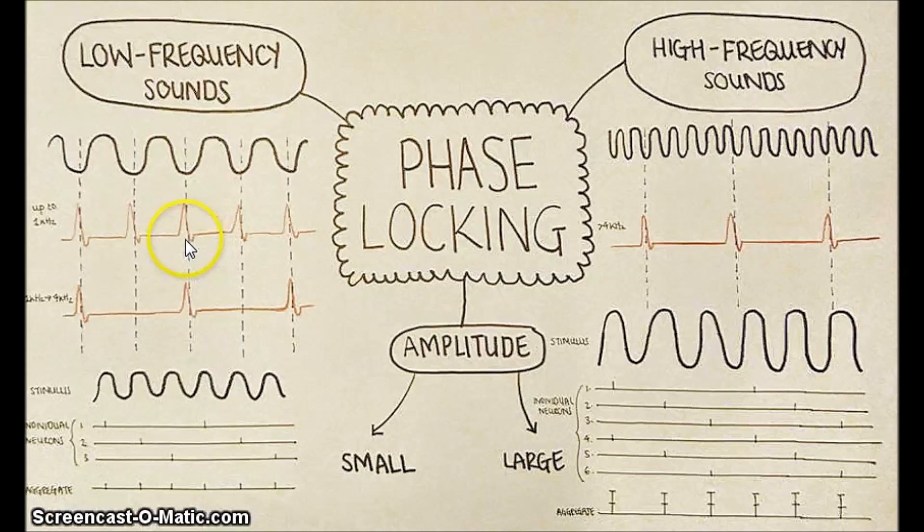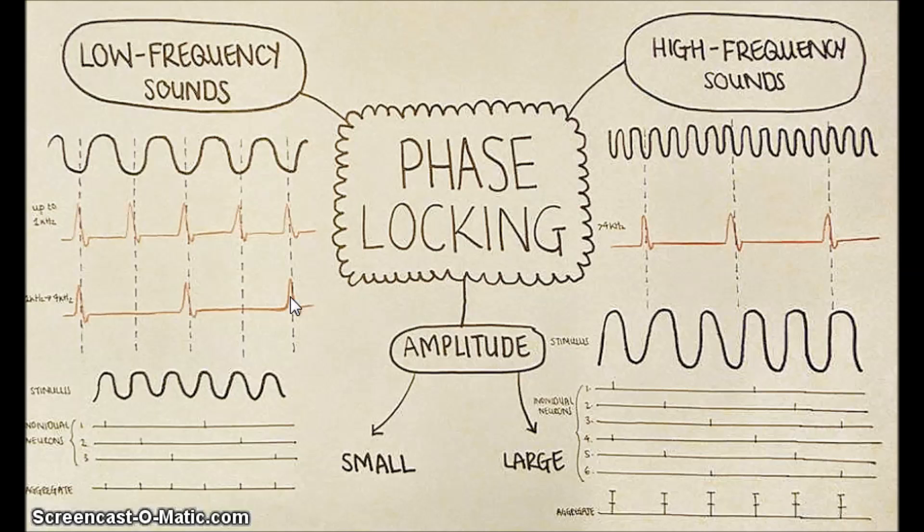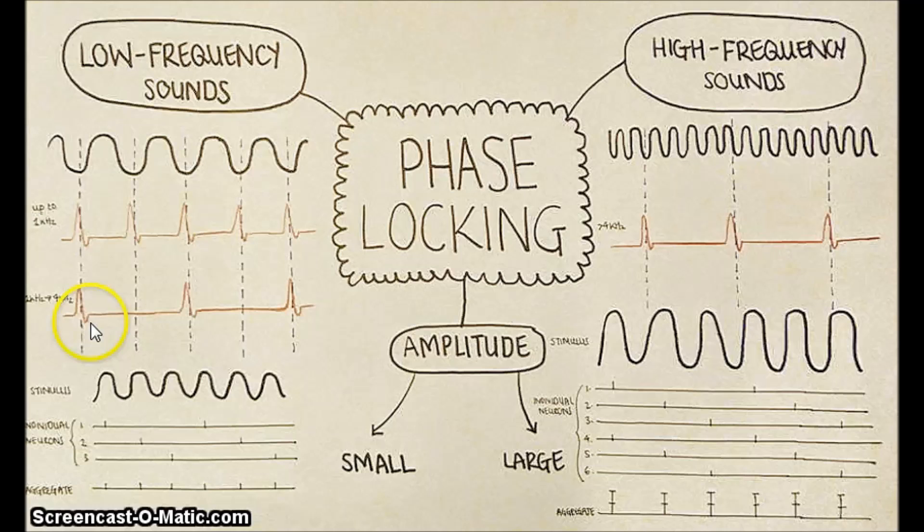At slightly higher frequencies, between 1 kHz and 4 kHz, neurons can't fire for every single cycle, because their firing rate is limited by their refractory periods. For example, here the neurons are only firing at 50% of the cycles.